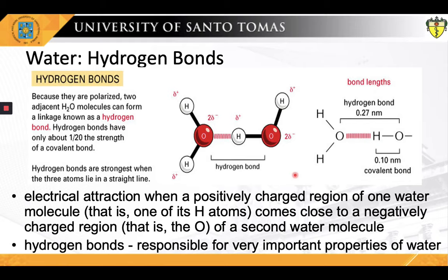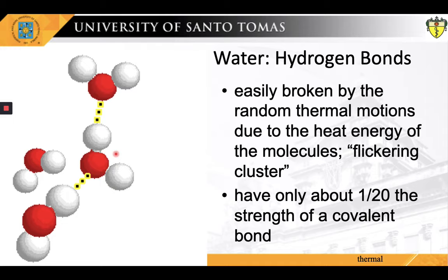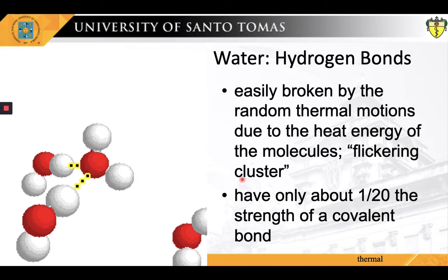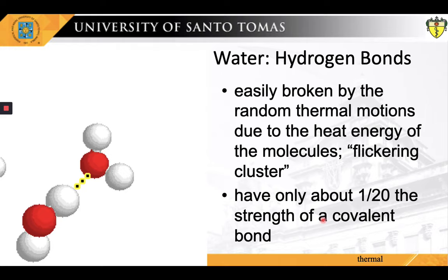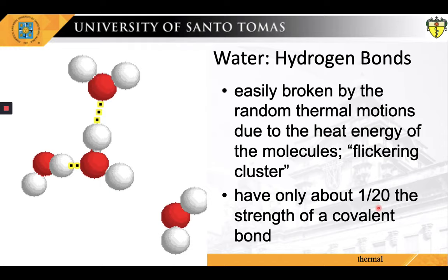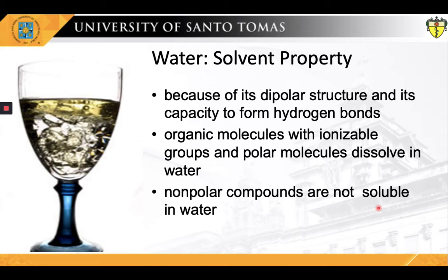Molecules of water are joined together transiently in a hydrogen-bonded lattice. Even at 37 degrees centigrade, 15% of water molecules are joined to four others in a short-lived assembly known as a flickering cluster, producing a network in which hydrogen bonds are being continually broken and formed. This cohesive nature of water is responsible for many of its unusual but biologically important properties, such as high surface tension, specific heat, and heat of vaporization. Because of the dipolar structure of the water molecule, organic molecules possessing ionizable groups or polar functional groups can dissolve in water. In contrast, nonpolar compounds are not soluble and cannot be dissolved in water.